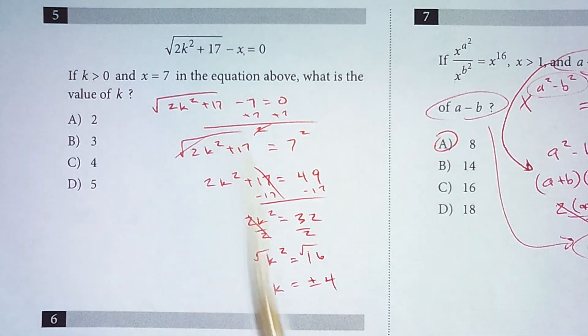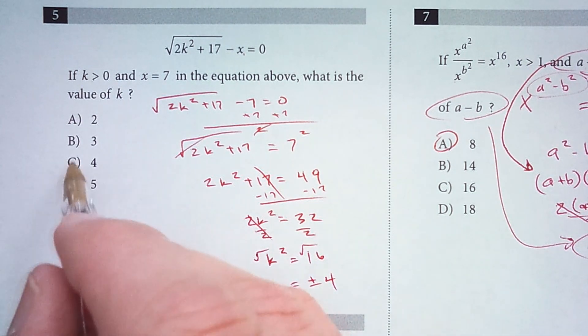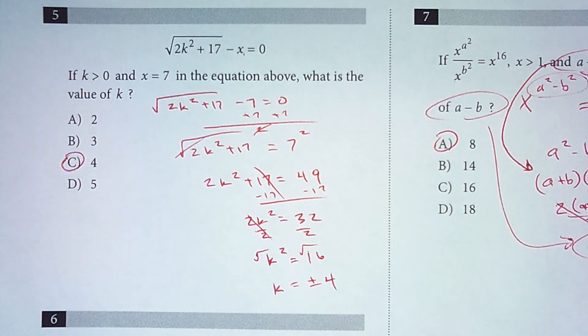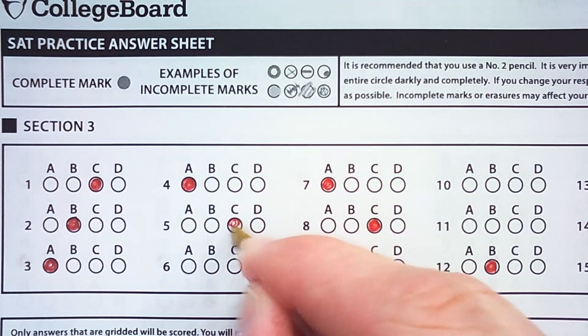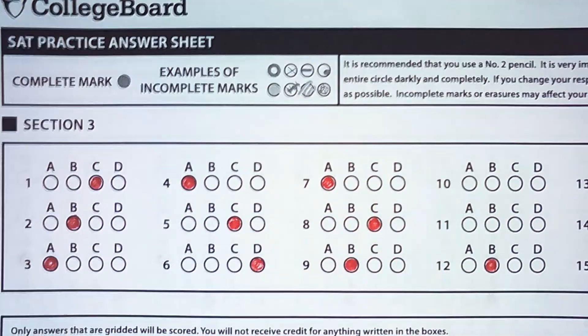But it says k is greater than zero. So the only option here is positive 4. So for number 5 we are choosing option C. Thank you.